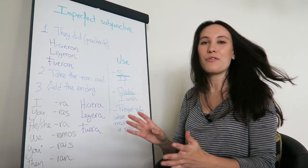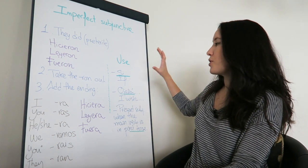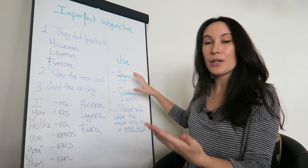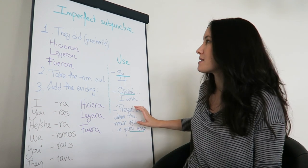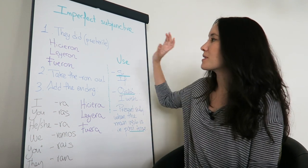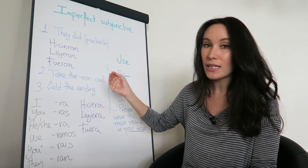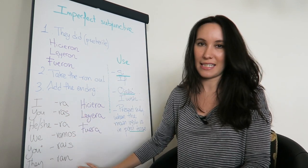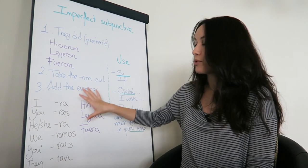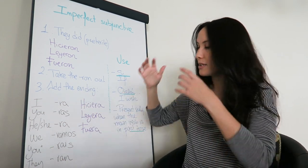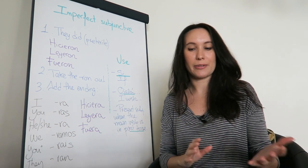So that's everything for imperfect subjunctive. You use it with 'if,' 'I wish,' or a case for present subjunctive when the main verb is in past tense. We take the 'they did' form in preterite, take out the '-ron' at the end, and add these endings — or the alternative ones I showed on screen. I'll go with these ones because they're more common and they work for both Spain and Latin America.